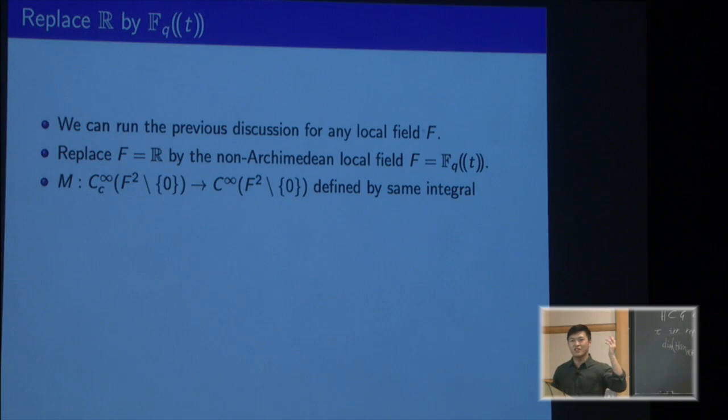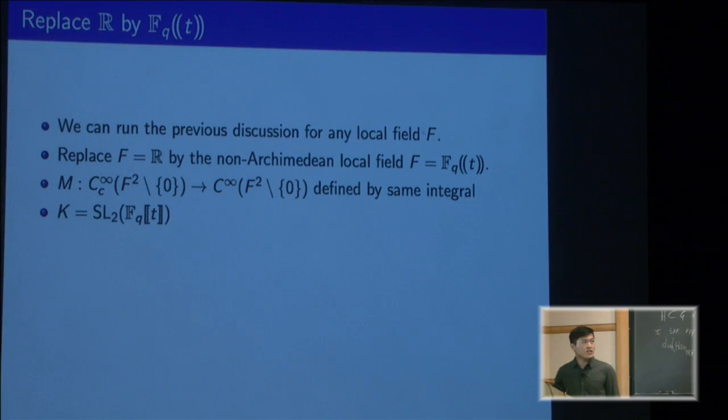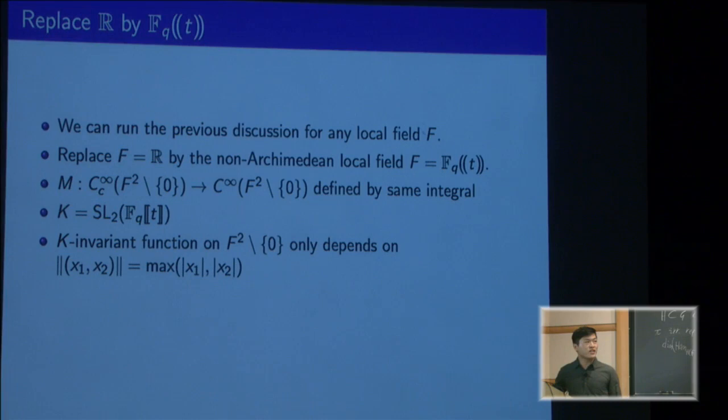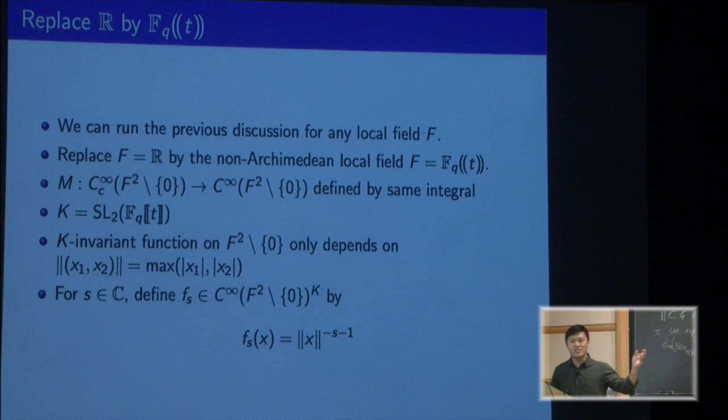Luckily, everything that I previously said basically just goes through where you just change this bold R to an F. The Radon transform is defined in the same way—you just integrate over lines. Our compact group is going to be SL2 with values in Taylor polynomials. If we consider K-invariant functions, it only depends on the norm. Because we're using a non-archimedean local field, the norm is this maximum of the absolute values of each of the coordinates of your vector.